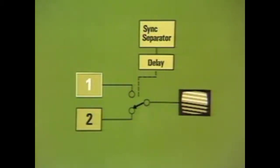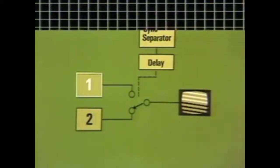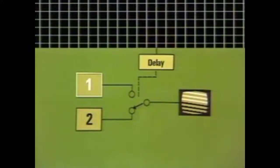The two signals we'll be using are the grille and the diagram of the cistern. At the moment I'm using zero delay, so the second picture is switched in right at the beginning of each field and we have the complete diagram. Now I'll increase the delay and the grille starts to appear at the top of the screen. Increasing the delay means that we stay with the grille for longer before switching to the diagram. When the delay is a whole field period, we have the complete grille.